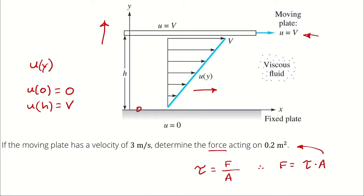And then because it's linear, I can say that the velocity at any point is going to be the proportion of the height between 0 and h multiplied by v. So y over h multiplied by v.